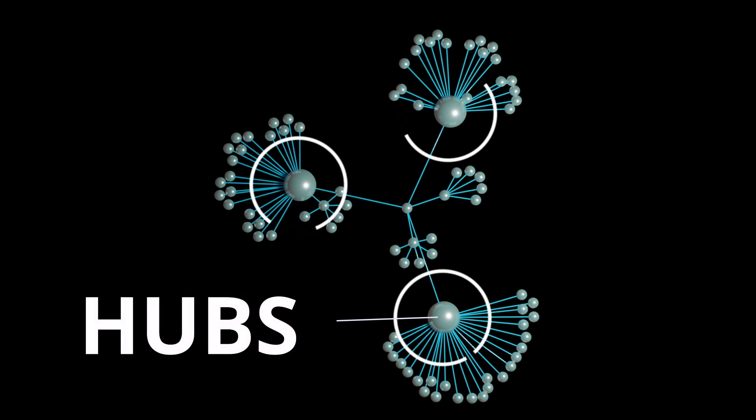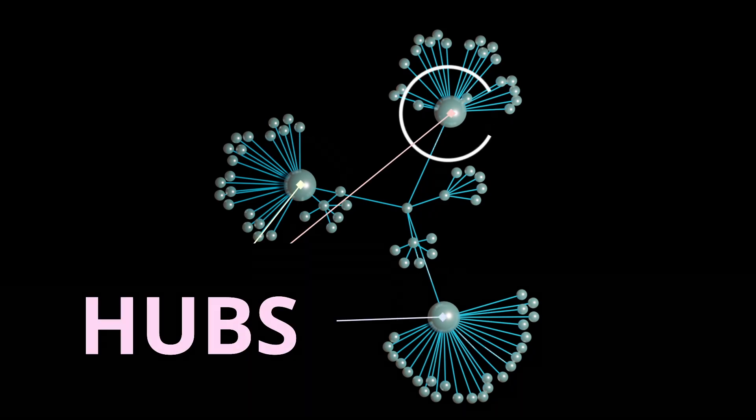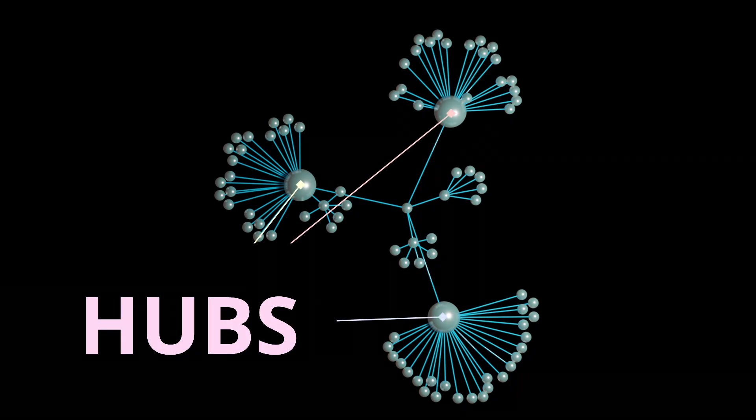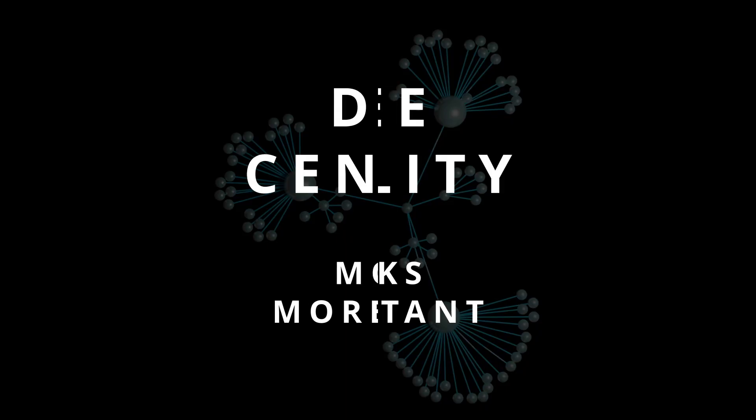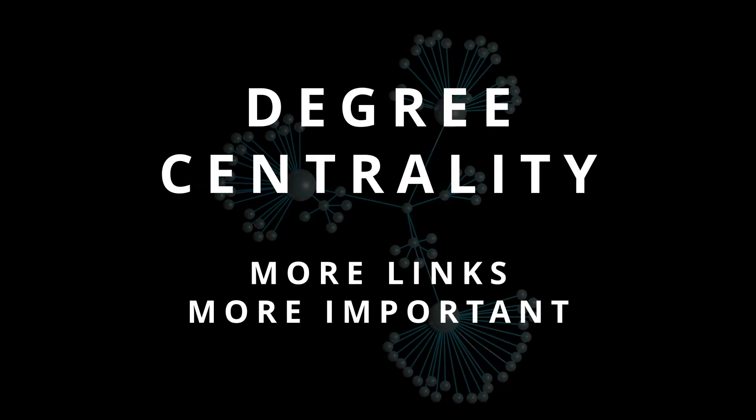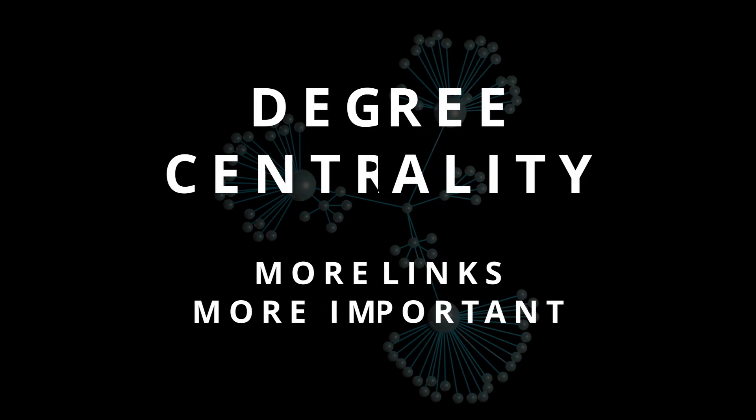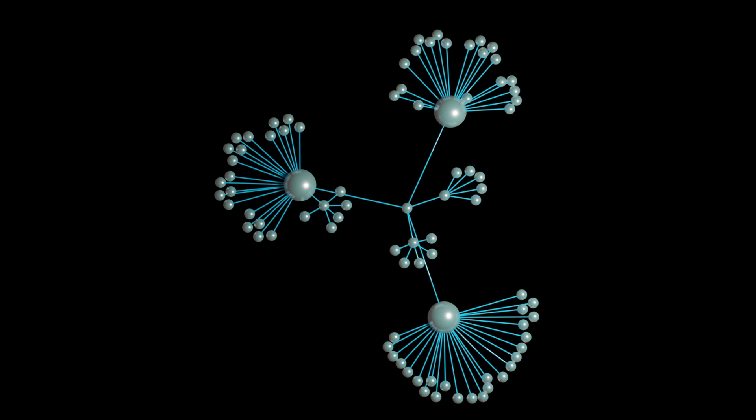If this network represented something like an airport system, then we would probably surmise that these hubs are particularly important because of their high degrees. The centrality measure that would probably best encapsulate this would be degree centrality, which ranks nodes according to the number of links that they have. This is exactly what we use in composing our team of six based off the highest out degree values.